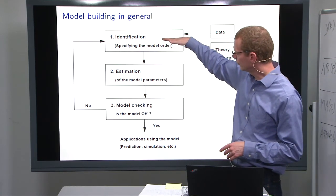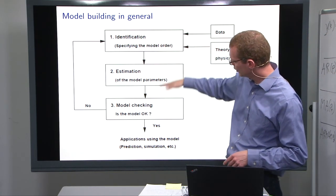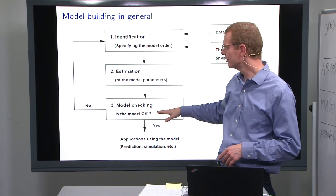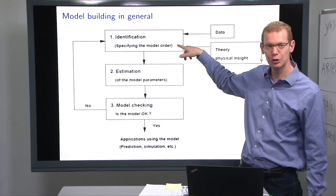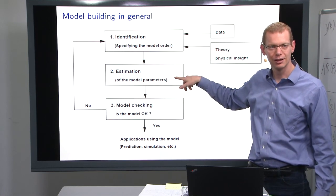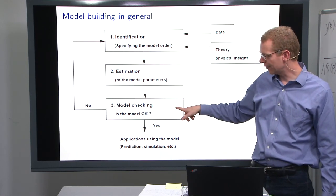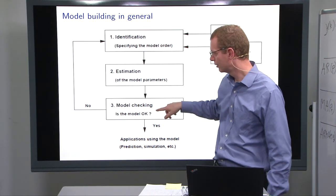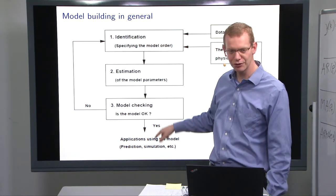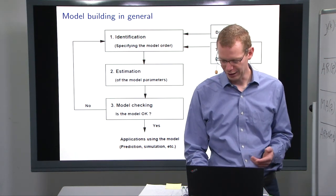So this is the same as going down through here, do the model checking, say it's not okay, but I got some information that I can use to specify a new model order. I can estimate those parameters and then I can check the model again. And then I can repeat this as many times as I like until I'm satisfied one way or the other.